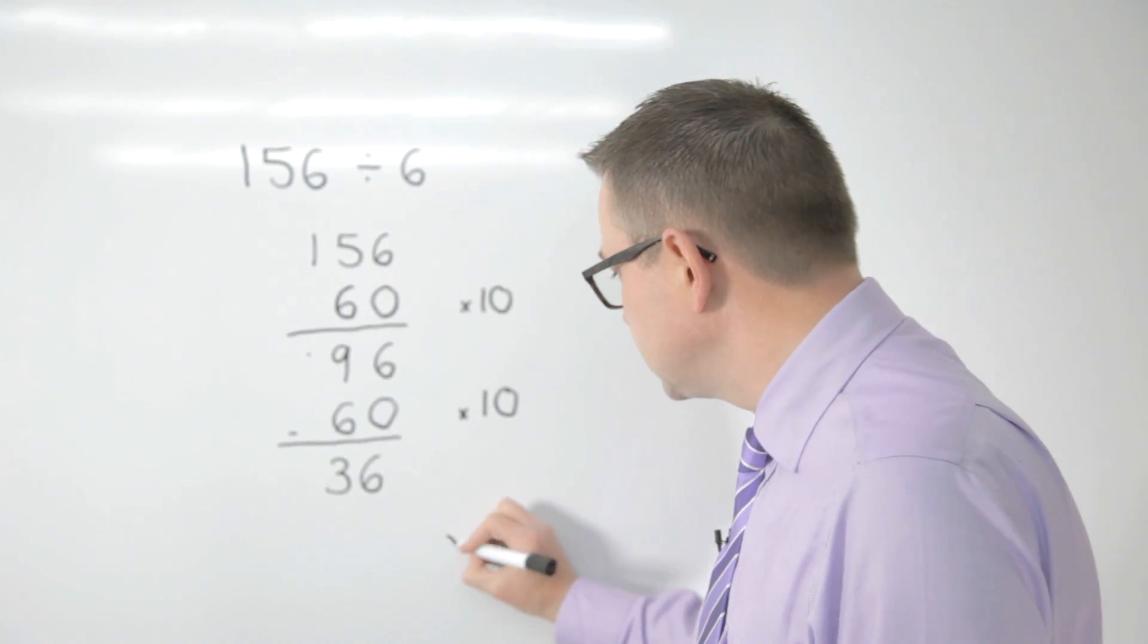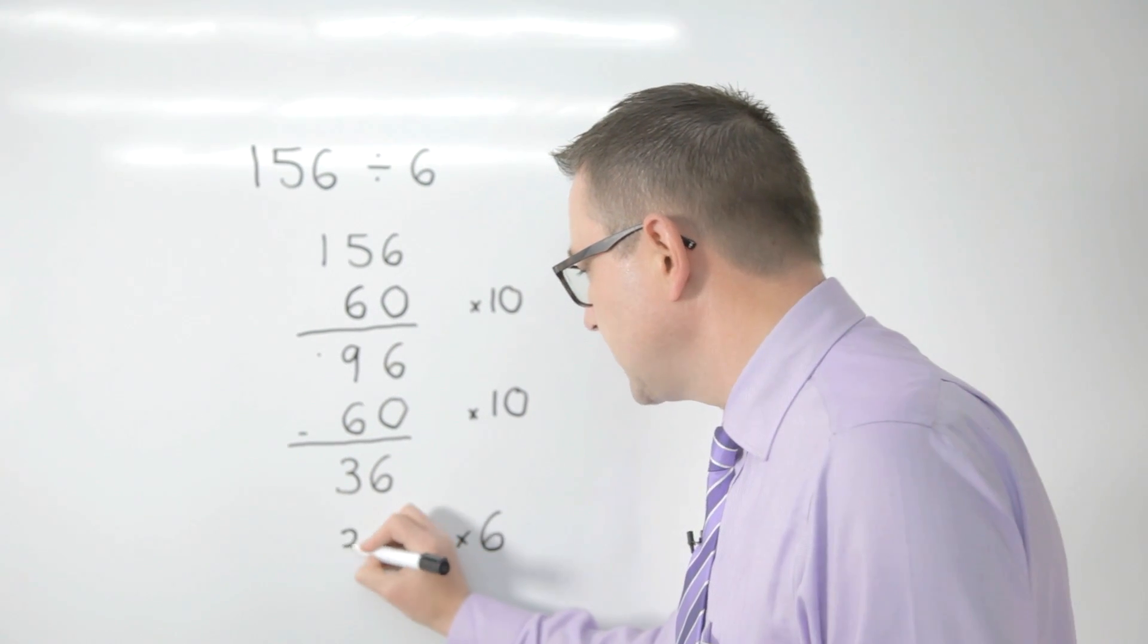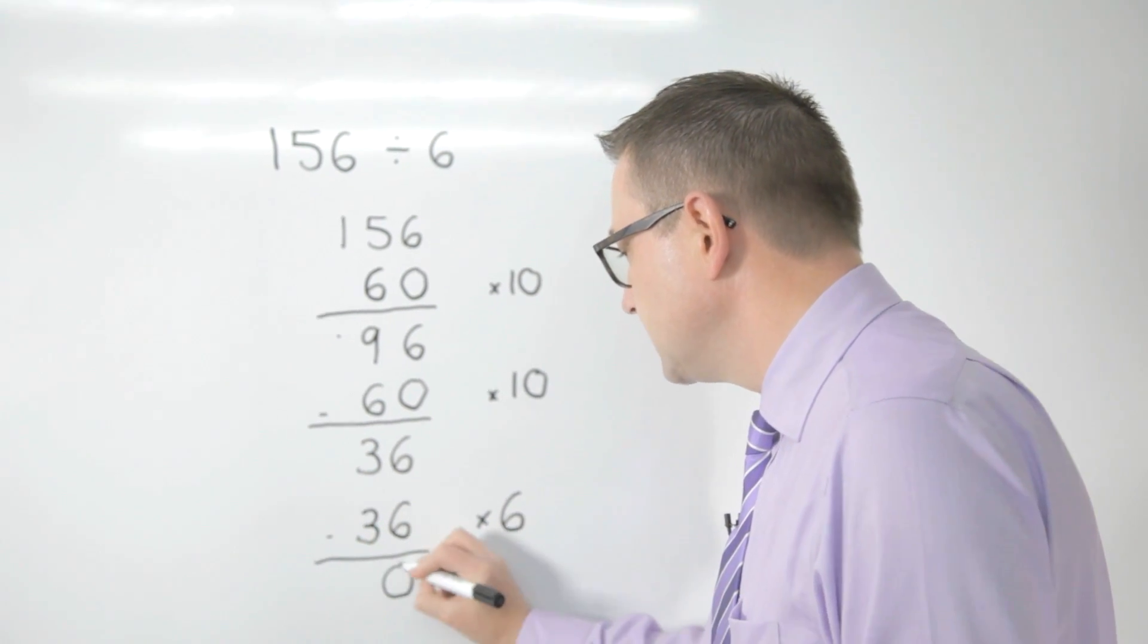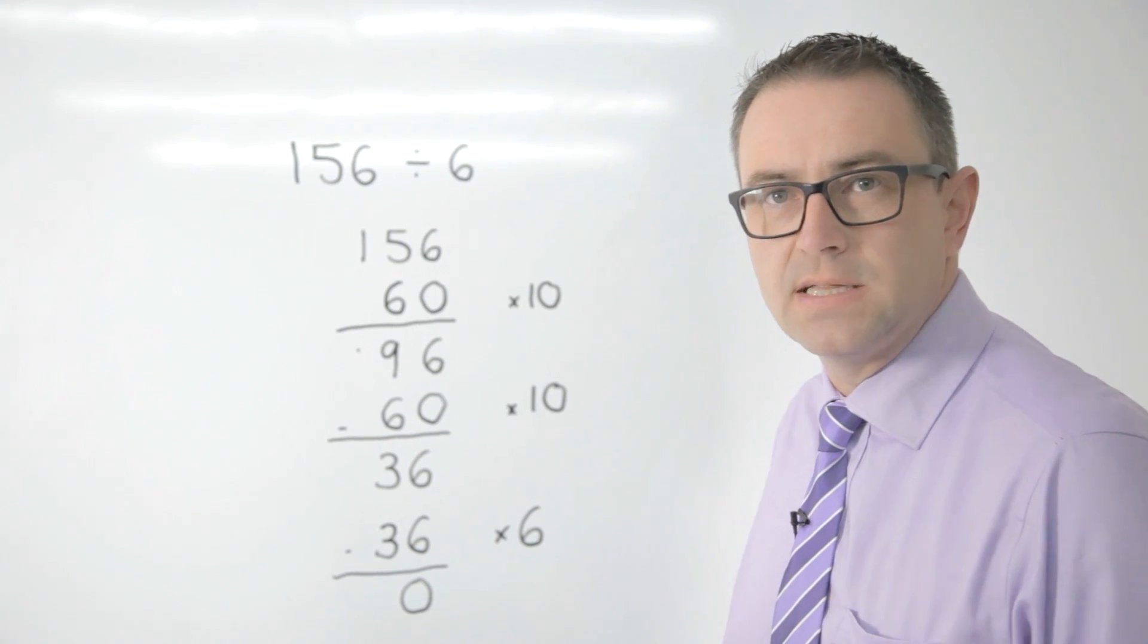But I know that 6 lots of 6 is 36, so that would be the last number that I'd take away which would leave me with 0 where I should be, unless there are remainders and we'll come back to that.